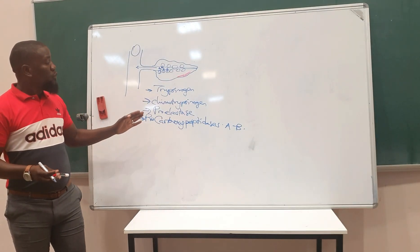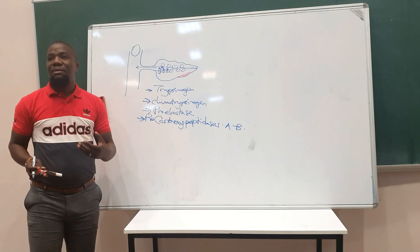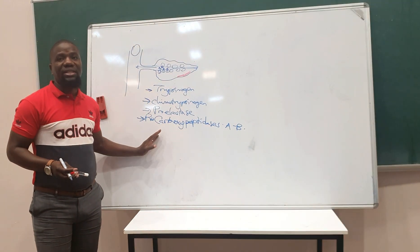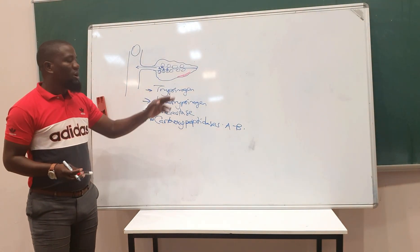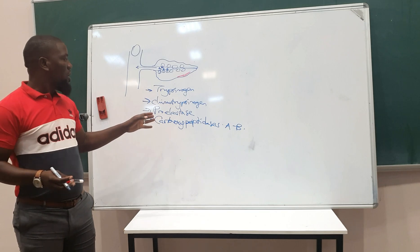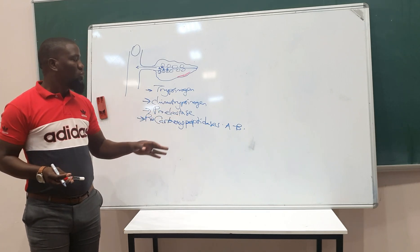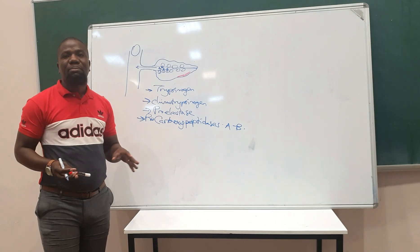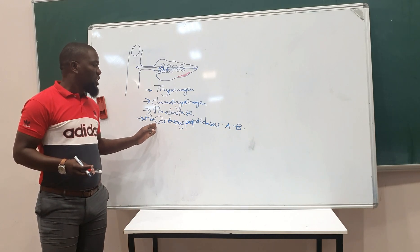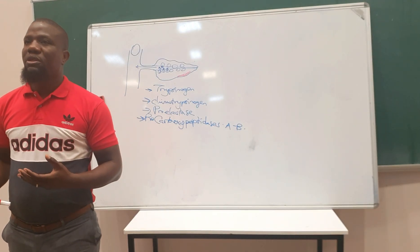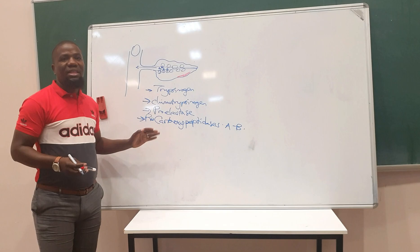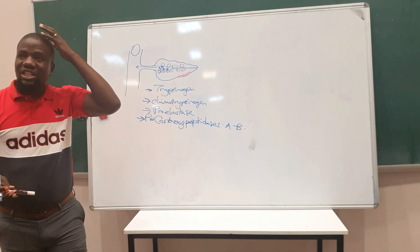This is a classical example of enzyme regulation by secretion as zymogens. Trypsinogen is converted to trypsin, chymotrypsinogen to chymotrypsin, pro-elastase to elastase, and pro-carboxypeptidases into carboxypeptidase A and carboxypeptidase B respectively. These are the enzymes that play a role in the digestion of proteins.